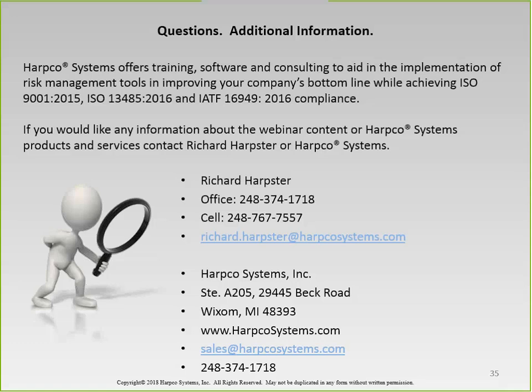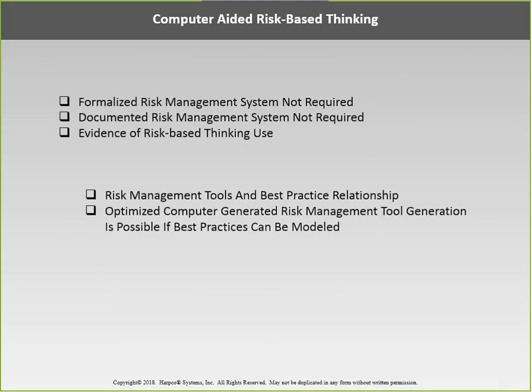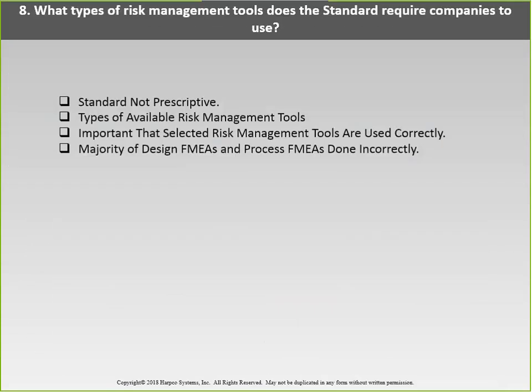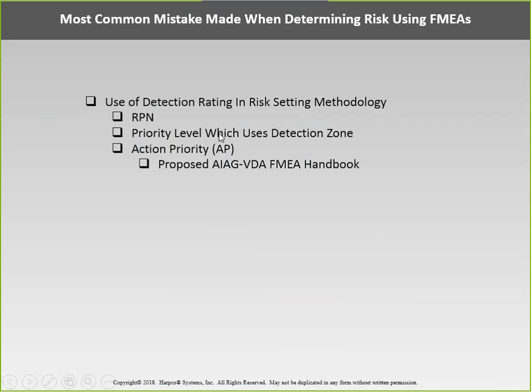Question about GM's risk-limited method with three matrices that includes detection in one of them. Answer: it doesn't work. That is essentially the same priority level approach using the detection zone — another form of RPN. If GM requires you to use it as a supplier, you put the column in the FMEA. But the risk matrix is much more powerful. If given 10 minutes, specific examples could show why detection-based composite scores don't work.